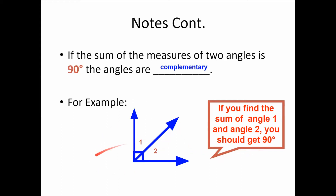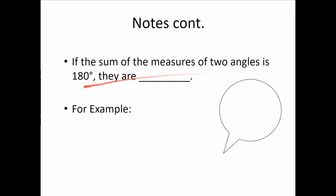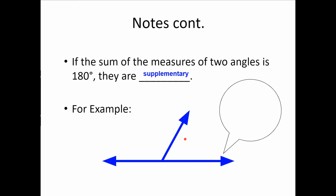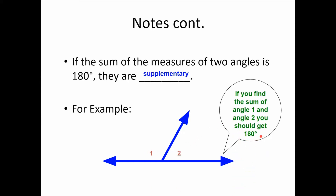If the sum of the measures of two angles is 180 degrees, they are supplementary. A straight line — a straight angle — is 180 degrees. If you split it into two angles with a ray, those two angles add up to 180 degrees and are supplementary. Note they don't have to be right next to each other — two separate angles that add up to 180 degrees are still supplementary.